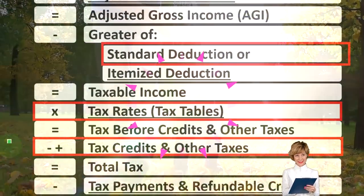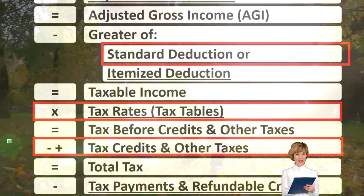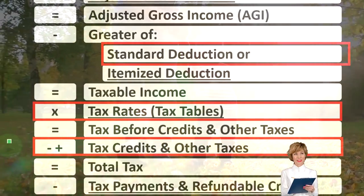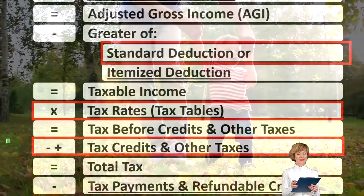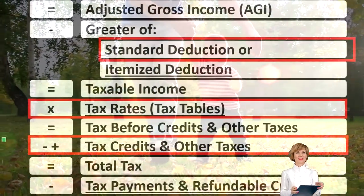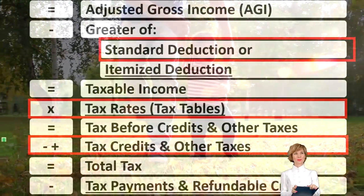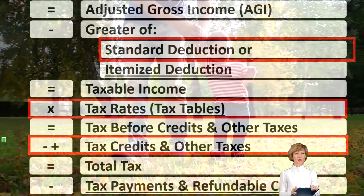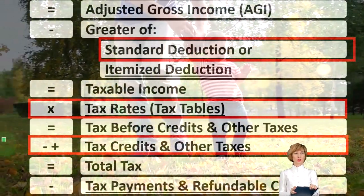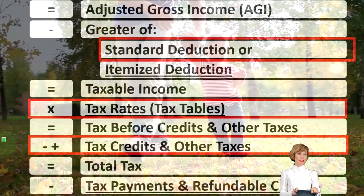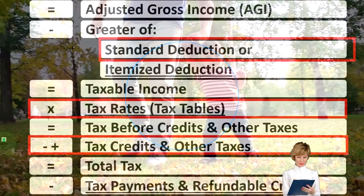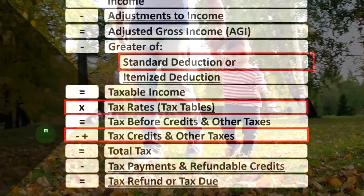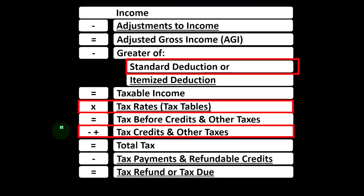When we think about dependents, the dependent that qualifies as a child for the child tax credit is usually going to give us the highest tax benefit for a dependent. And if we can't get that, then we're going to see if we can get the other benefit — the other dependent credit. That's the general idea.